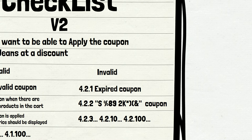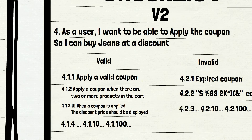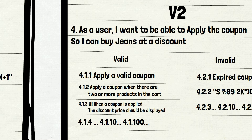Inexperienced testers will start with invalid scenarios for version 2 — apply expired coupon, empty coupon, invalid coupon, special characters, and more complex negative scenarios — trying to break something and log a bug. Mostly that is a bad approach. Another obvious way is to run positive test cases for version 2, such as applying the valid coupon. You can pause the video and think about what you would do. The answer is: in the scope of smoke and sanity tests, you should start with smoke testing.